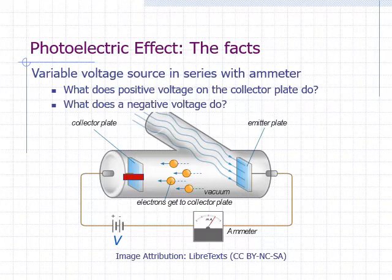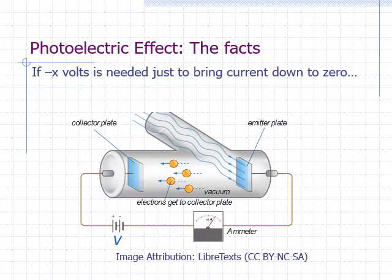That is why a negative voltage applied on the collector plate is called an opposing voltage. If the opposing voltage is negative enough, the photoelectrons will turn around before making it to the collector plate and no current will register in the ammeter. The smallest opposing voltage needed to stop the current is called the stopping voltage.